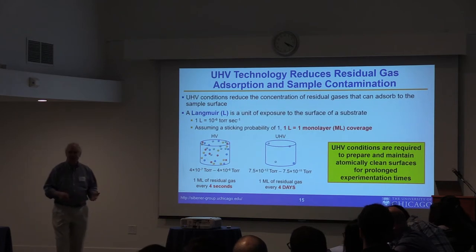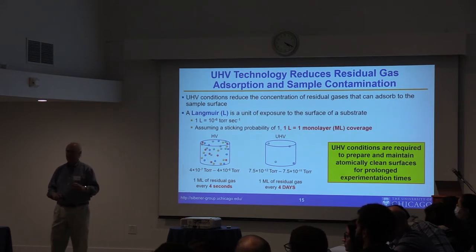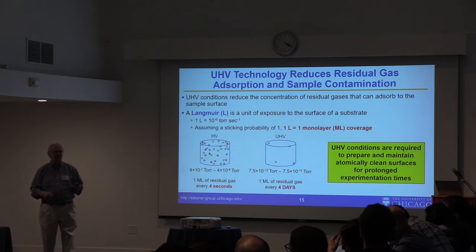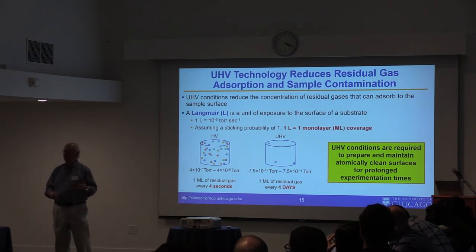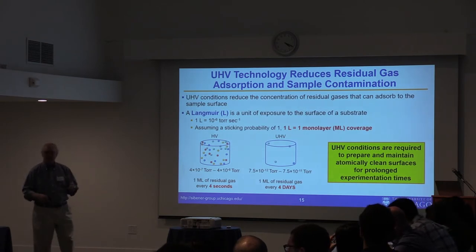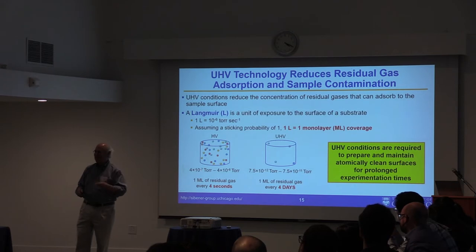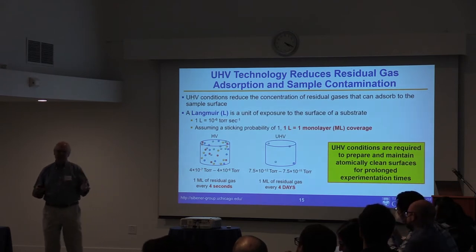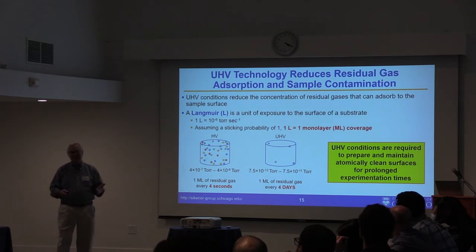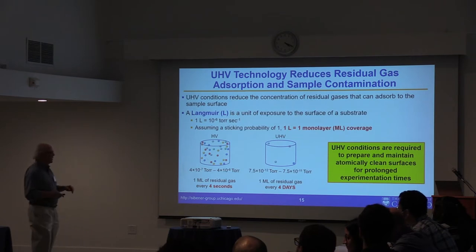I worked for Mark Cardillo as a post-doc — a very brilliant but entertaining person — and he had a saying: he never met a leak that he couldn't overcome with a big enough pump. The better solution: don't have a leak in the first place. He also wanted to write a paper claiming we were at 10⁻¹¹ torr, and when the pressure was about 1.5×10⁻¹¹, he said 'lower the temperature in the room' or 'touch it with an ice cube.' We got it down to 9×10⁻¹² — but you don't want to do it that way.